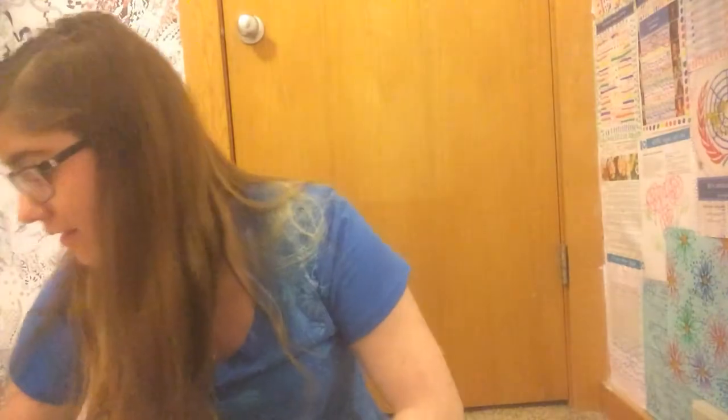A chromosome is DNA wrapped around a histone, which is a protein. Genes are segments of DNA that code for proteins. DNA replication is making a copy of DNA — it occurs at the end of interphase, before mitosis and meiosis. Steps of DNA replication: enzymes unzip the DNA by breaking the hydrogen bonds; then an enzyme called DNA polymerase moves along the single strand of DNA and matches up DNA nucleotides with the original nucleotides following the base pairing rule.